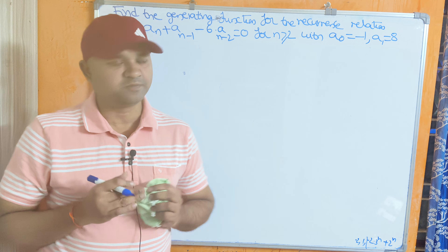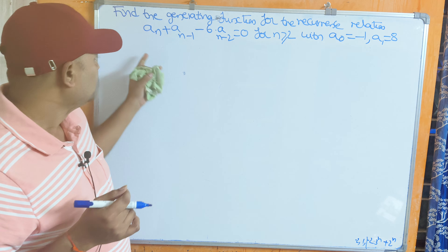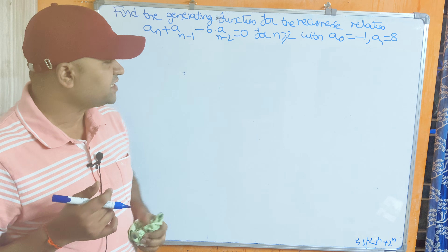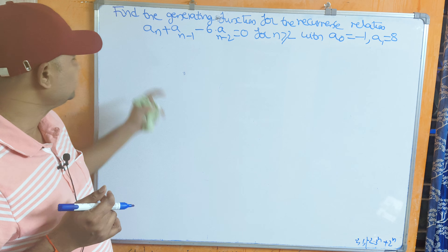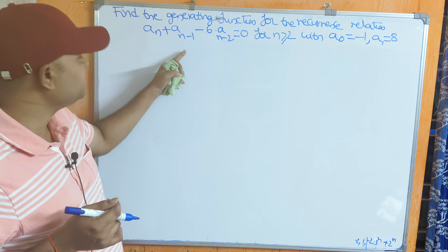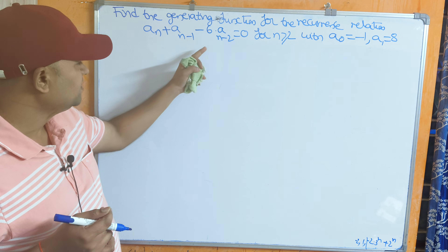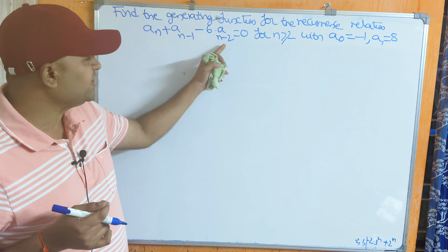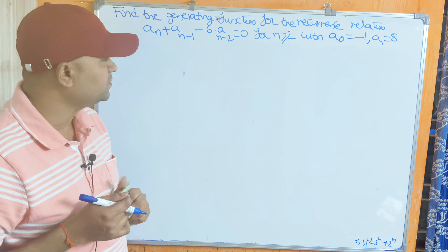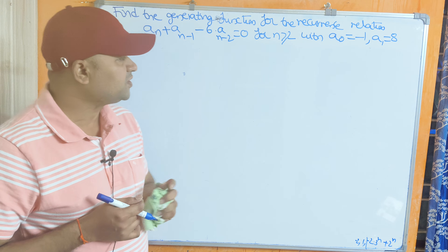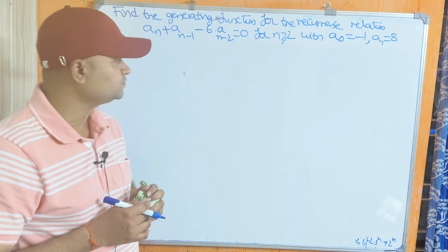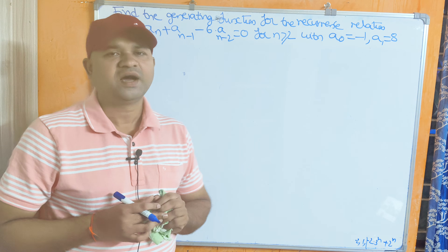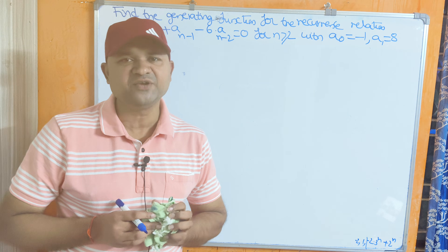Now let us solve this problem. Find the generating function for the recurrence relation aₙ + aₙ₋₁ - 6·aₙ₋₂ = 0, for n ≥ 2, with a₀ = -1 and a₁ = 8.